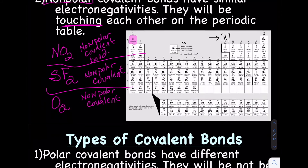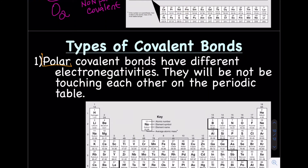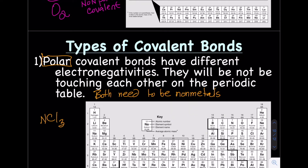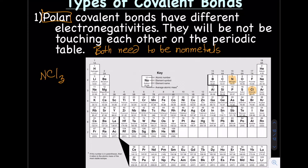Now let's finish up our last type of covalent bond: the polar covalent bond. Polar covalent bonds will contain atoms that have different electronegativities or different nuclear strengths. For us, they're going to be not touching on the periodic table — but they do both need to be non-metals. An example would be NCl — N and Cl are both non-metals, but they are not touching each other on the periodic table, so that would be a polar covalent bond.